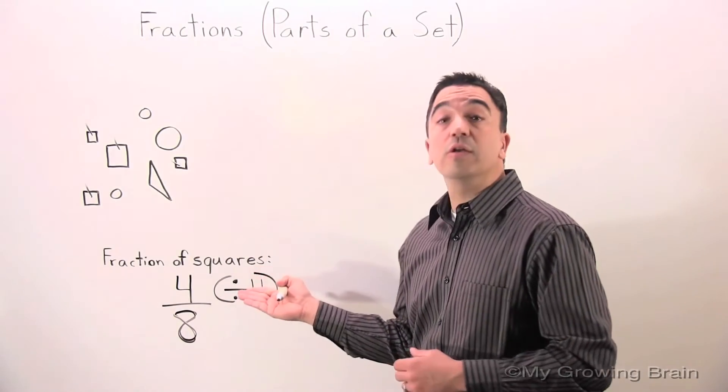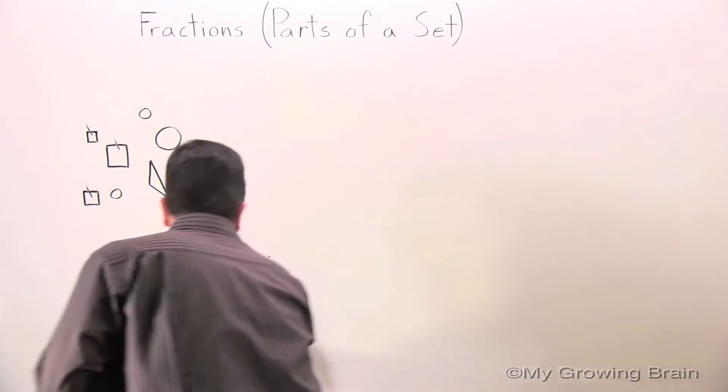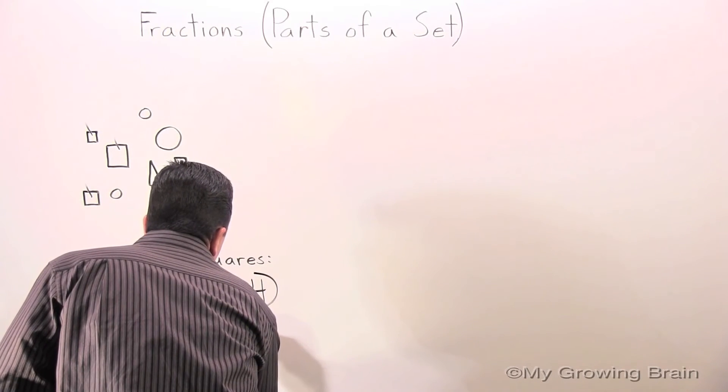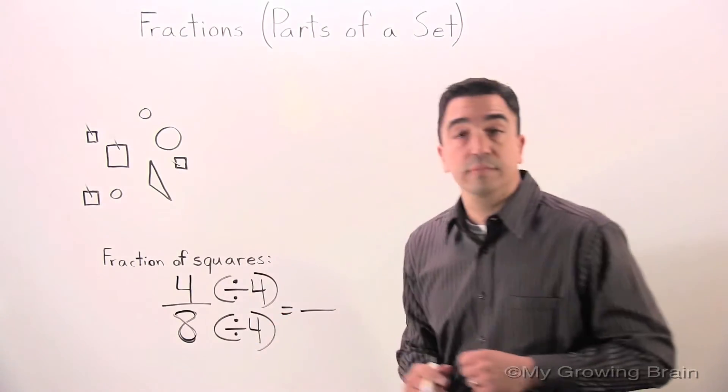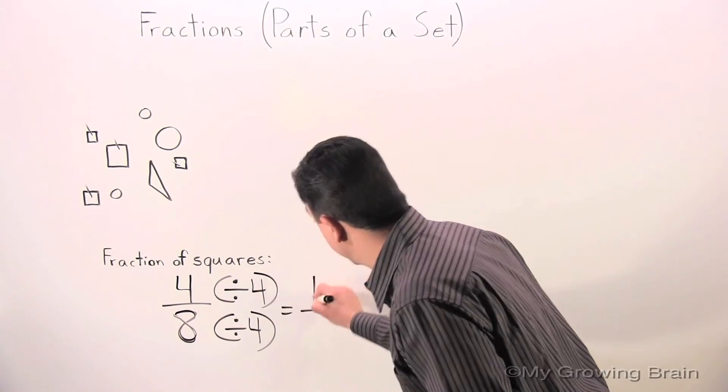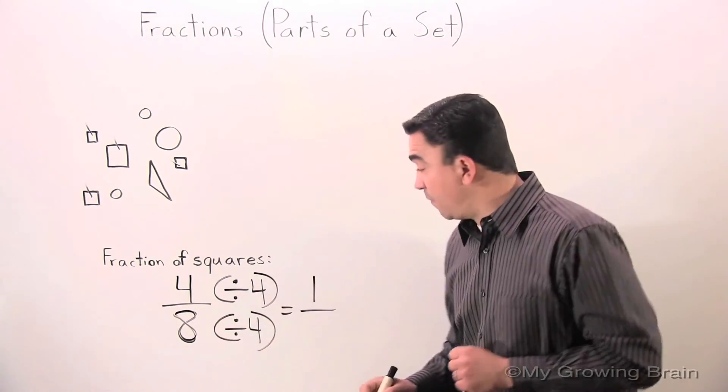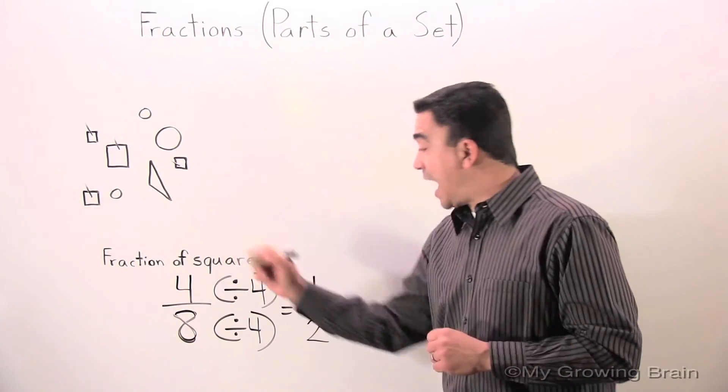Now, whatever I do to the numerator, I have to do to the denominator. 4 divided by 4, 1. 8 divided by 4, 2. The fraction is 1 half.